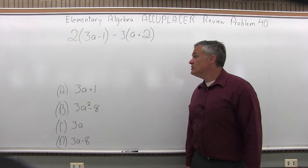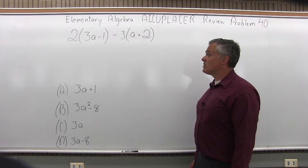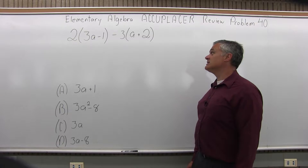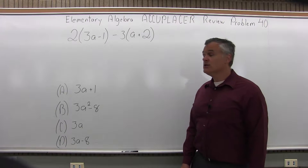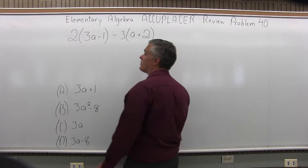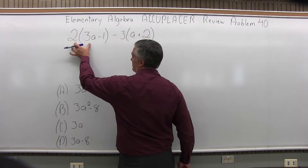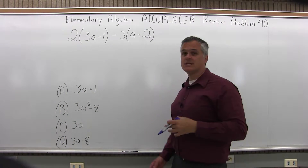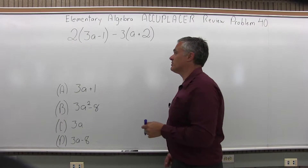It says 2 times in parentheses 3A minus 1, minus 3 times in parentheses A plus 2. So first, let's clear the parentheses. What I'm going to do is multiply the value in front of the parentheses times each piece inside the parentheses, then group the terms together that I can group together.